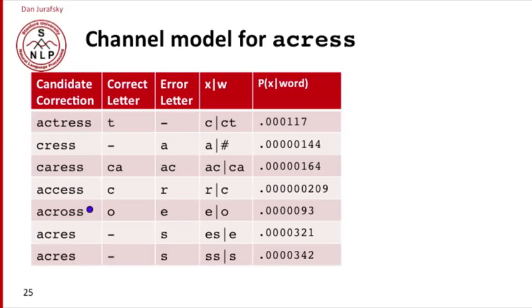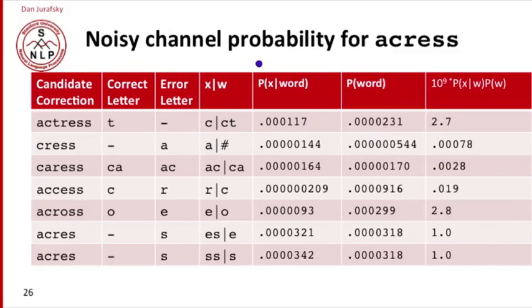This channel model, for example, for a word like actress where we generated ACRESS when we should have typed CT, we typed a C, so the word had a CT in it, but the error had only a C. What's the probability of deleting a T following a C? If we normalize the probabilities in our confusion matrix, here's the likelihood of this word, actress, being realized as this misspelling, acress, it's .000117. The language model, here's the error model or the channel model. Now we can add in the language model.